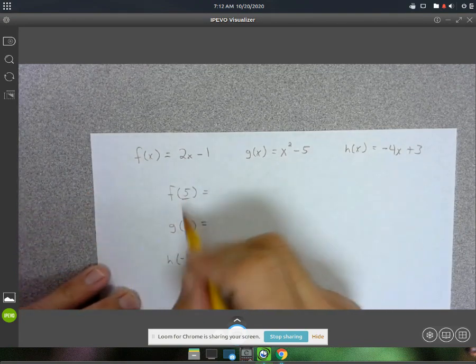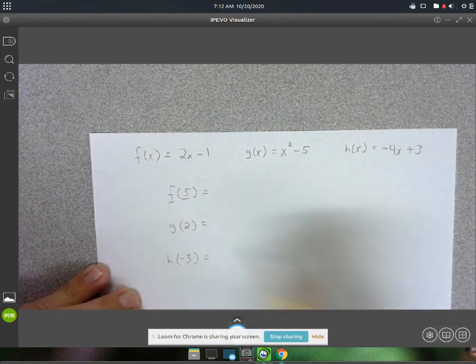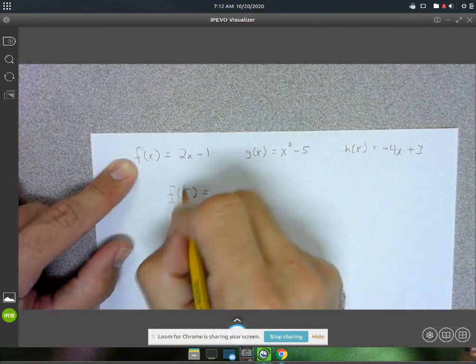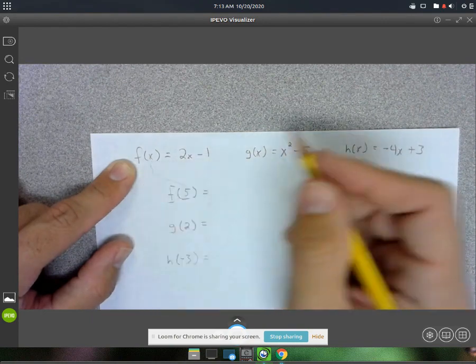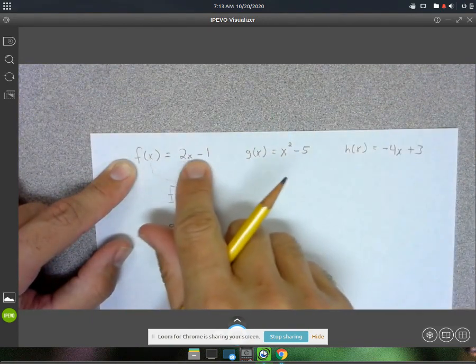Alright, so this is function notation, and what it tells us is that we need to go to the f function, so up here, and plug in 5 for the x. Alright, so it's like we're plugging in a 5 here, and plugging in a 5 there, but this is the only side that we really care about.